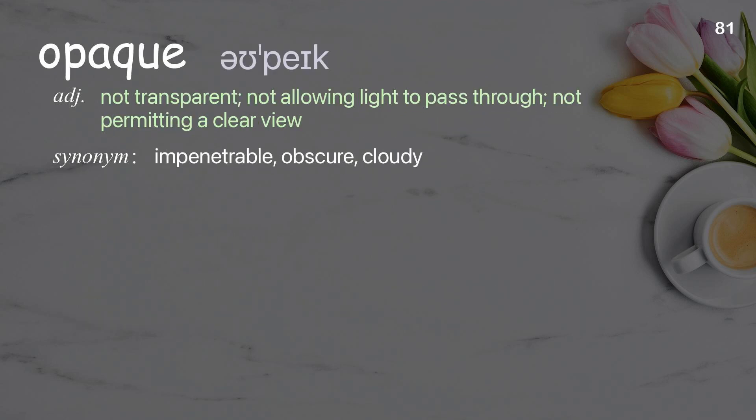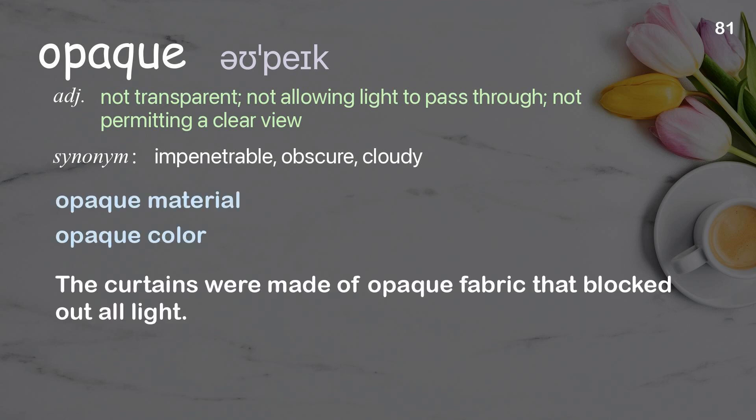Opaque: not transparent; not allowing light to pass through; not permitting a clear view. Examples: opaque material; opaque color. The curtains were made of opaque fabric that blocked out all light.